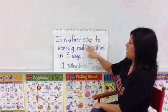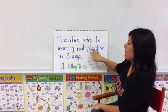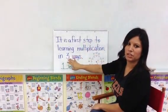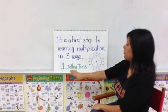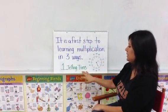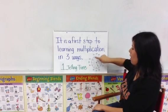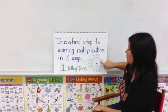Skip counting is a first step to learning multiplication in three ways. The first one is by telling time on a clock.